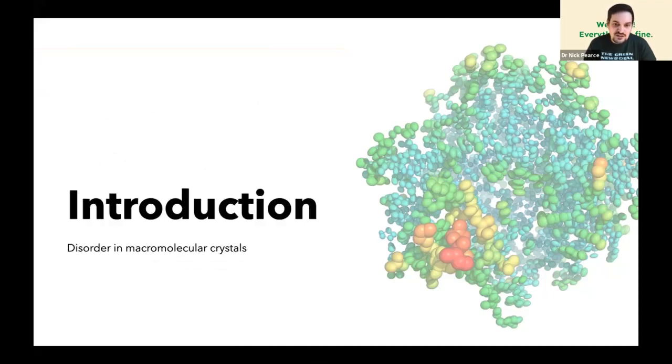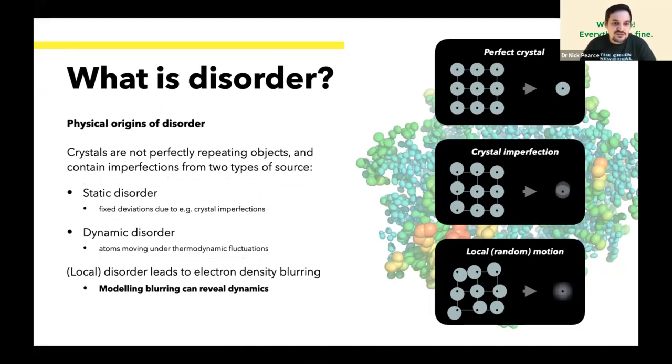So to begin, disorder in macromolecular crystals. As hopefully all of us know, crystals that we use to collect data from are not perfectly repeating objects and they contain imperfections. Some of these can be described as static disorder, which I'm going to broadly call crystal imperfections, and then we have potentially more interesting things like dynamic disorder, which is disorder in our crystal caused by things moving around.